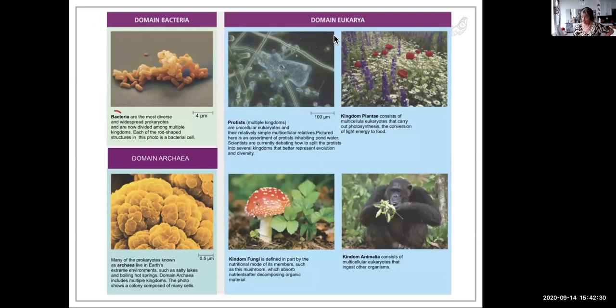The domain Bacteria is very diverse and widespread. There are multiple kingdoms now in the Bacteria as well. The domain Archaea are in extreme environments like super salty lakes and very hot environments, even ice environments. The domain Eukarya includes the Protists—multiple kingdoms, some multicellular but most unicellular, like the amoeba. The Plantae is another kingdom; it's multicellular, but Plantae are autotrophs—they make their own food by photosynthesis. The Fungi are saprobes—they decompose and absorb nutrients from the environment. Then Animalia are multicellular eukaryotes that ingest other organisms.